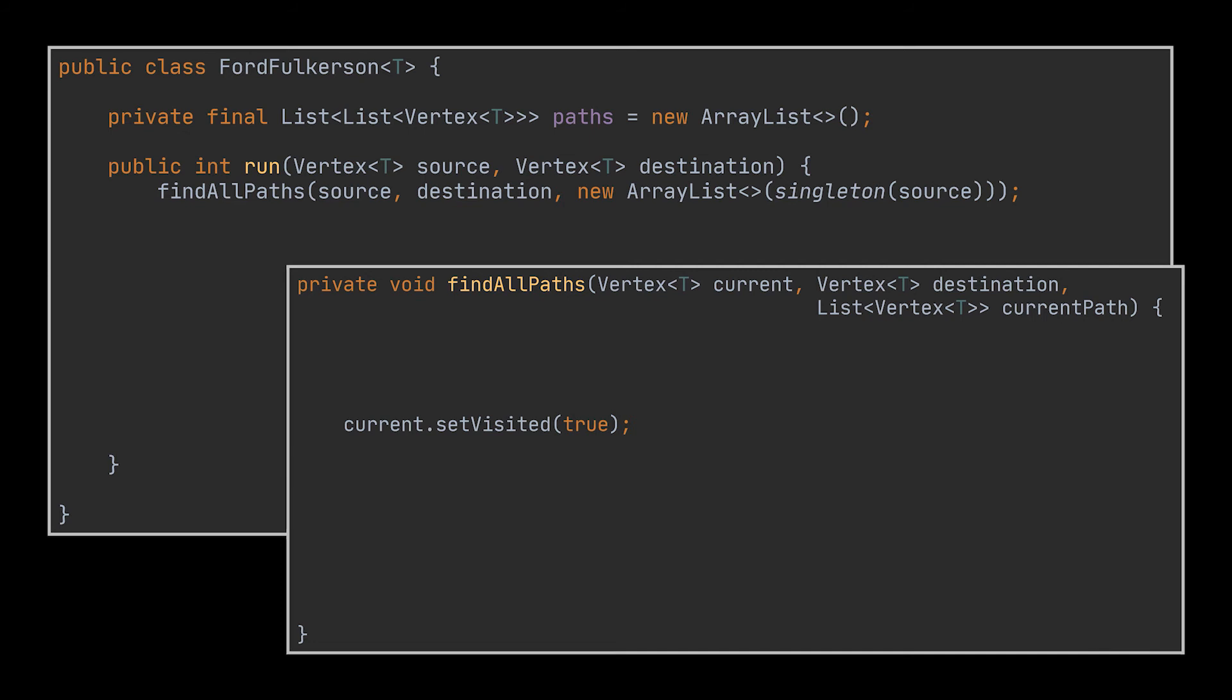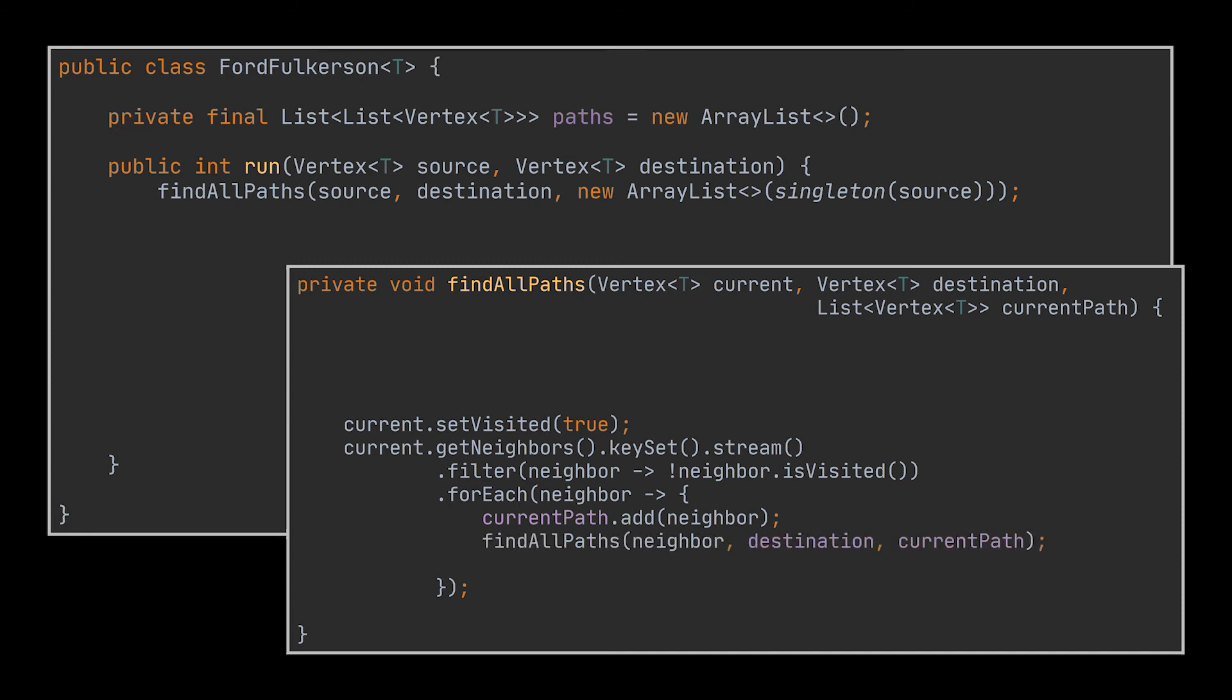To implement this, as we mentioned, we will start by setting the source or the current vertex we are working with to visited. Then for each unvisited neighbor of that vertex we're going to add that neighbor vertex to the path at hand, which started off as the source. And then we will call recursively the same method on that neighbor, which will keep adding vertices to the current path variable until a path is found. When a path is found we add it to our list of paths and exit from the current execution.